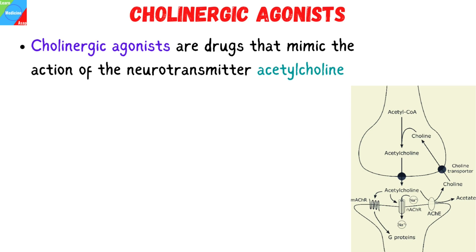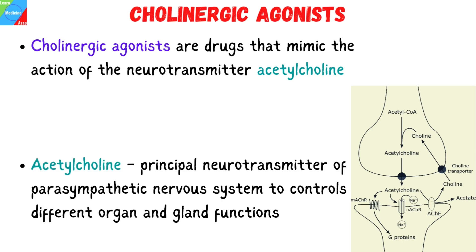Cholinergic agonists are drugs that mimic the action of the neurotransmitter acetylcholine. The parasympathetic nervous system predominantly uses acetylcholine as its principal neurotransmitter to control different organ and gland functions, including digestion, defecation, lacrimation, salivation, and urination.